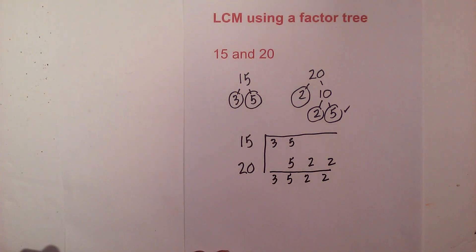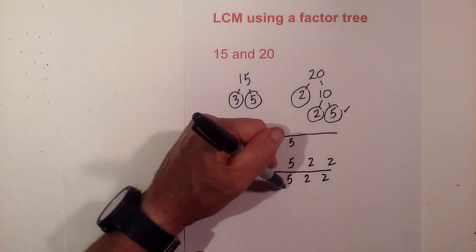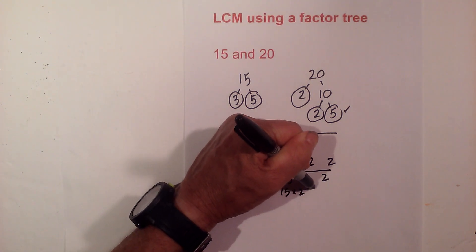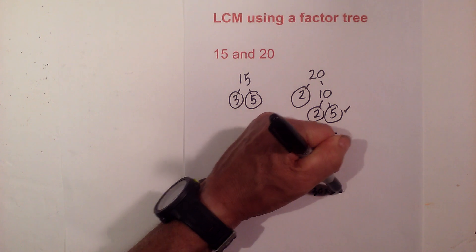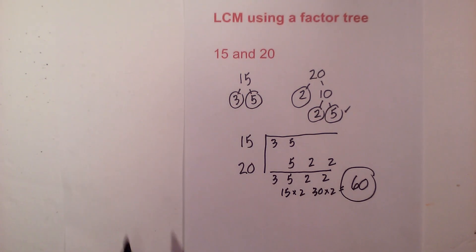So now I have 3 times 5 times 2 times 2, so let's go ahead and do that. 3 times 5 is 15, times 2 is 30, times 2 equals 60. So the LCM of 15 and 20 is 60.